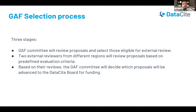The Global Access Funding Committee consists of a DataCite team and representatives from across regions, mainly from universities across different continents. The goal of this committee was to build the criteria, the program, and all the details Gabi just shared with you. They will also be involved in the selection process. The selection process has three stages: first, all proposals are reviewed by the GAF Committee at a high level. Successful proposals are then sent to external reviewers, who review based on predefined criteria. Recommended proposals from external reviewers are then sent back to the GAF Committee, who decide which proposals are advanced to the DataCite Board for funding.